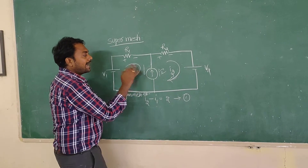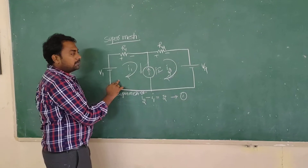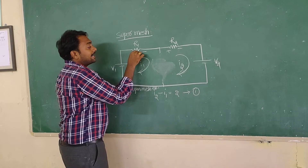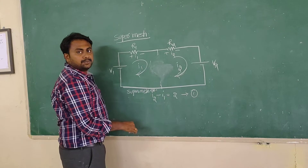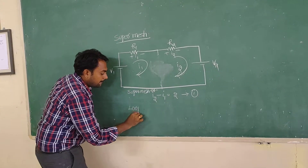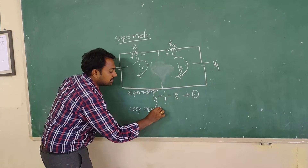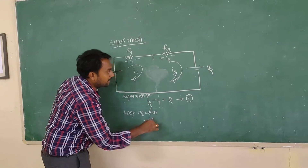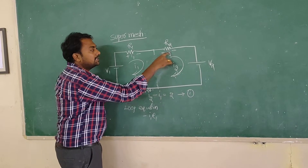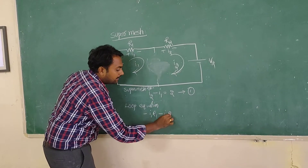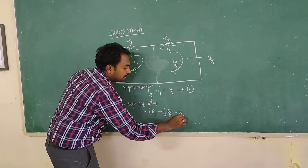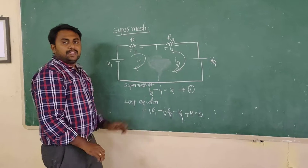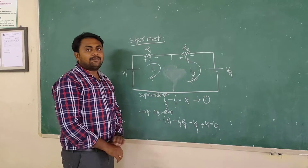Then I have to consider the whole thing as a single loop. The current across this is I1, and the current flowing through R2 is I1. So the loop equation becomes: going positive to negative, minus I1 R1; then minus I2 R2; then minus V2; then plus V1 equals zero. By solving these two equations, we can get the values of I1 and I2.